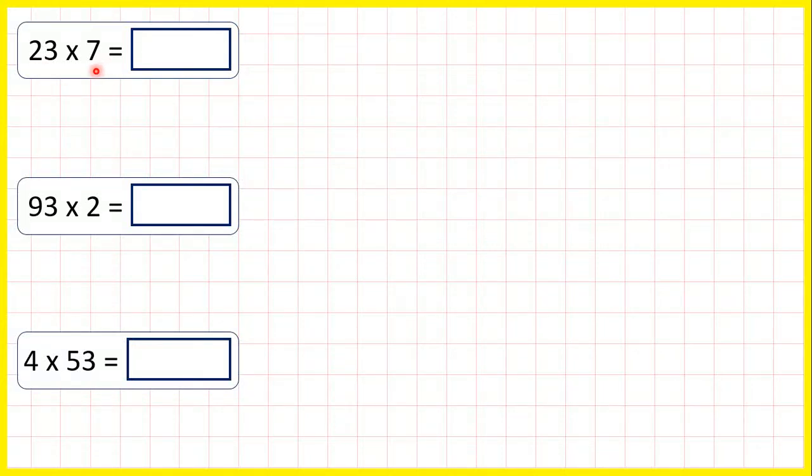23 times 7. Let's set this out as a short multiplication, so remember putting our larger number on top. Now we start by multiplying the ones, so 3 times 7 is 21, so 2, 1.